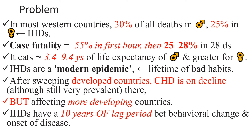What is the magnitude of the problem? In most western countries, about one third of all deaths in males and one quarter in females are due to ischemic heart disease. Case fatality is 55% in the first hour, then more than one quarter in 20 days. It eats about 3.4 to 9.4 years of life expectancy in males, and greater in females.